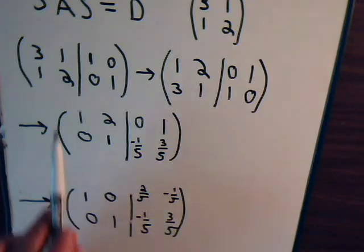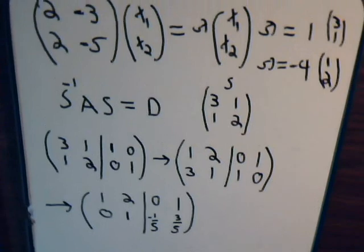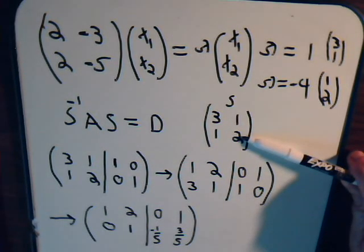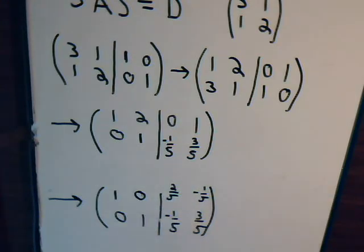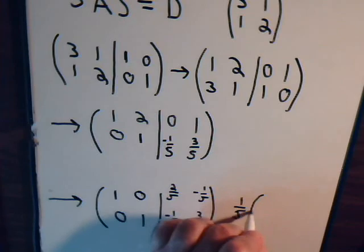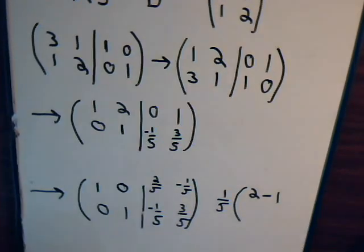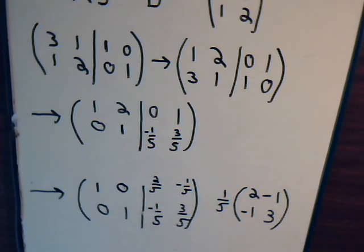We now have the identity matrix on the left side. The matrix on the right is the inverse of S. Looking at this inverse: we have [2 fifths, minus 1 fifth; minus 1 fifth, 3 fifths], which we can write as 1 fifth times [2, minus 1; minus 1, 3]. This matrix is the inverse of our S matrix.